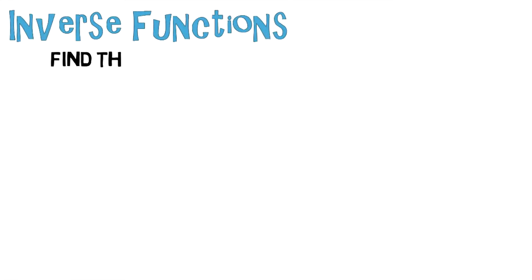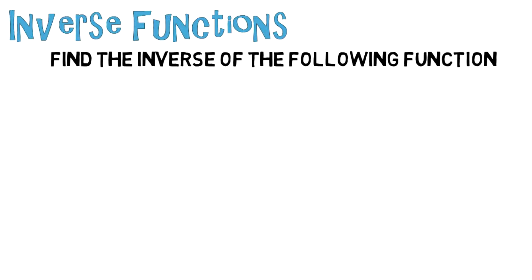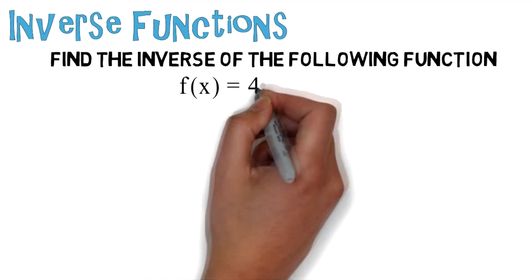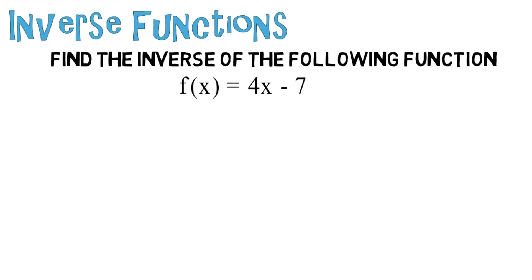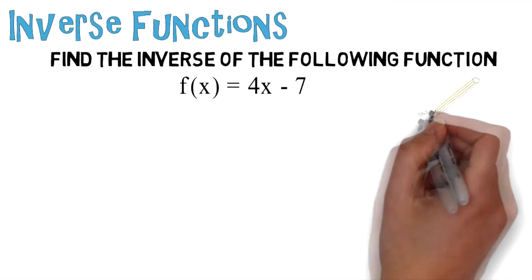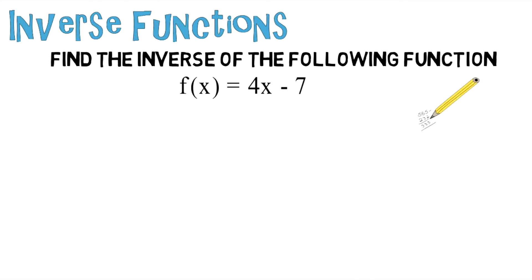Inverse functions: find the inverse of the following function. You're given f(x) = 4x - 7. I want you to take a second right here and try to figure this problem out for yourself, but if you get stuck, I'm going to provide you with a couple steps.